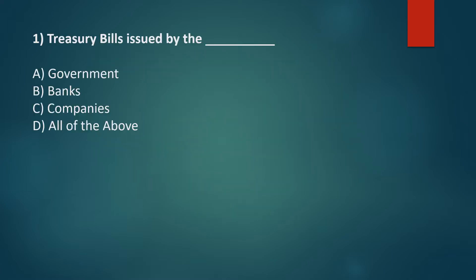First question: Treasury bills are issued by — Option A: Government, Option B: Banks, Option C: Companies, Option D: All of the above. The correct answer is Option A: Government.